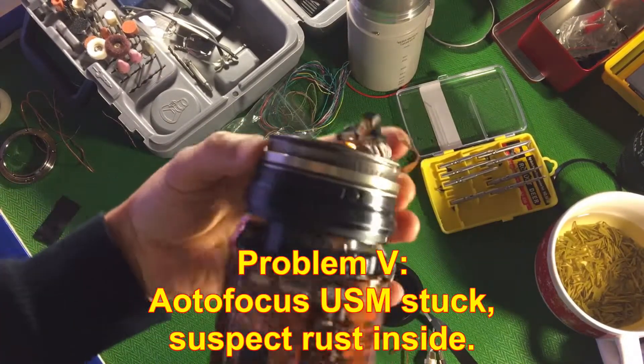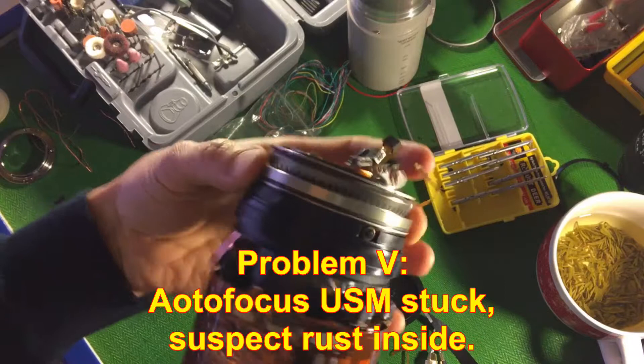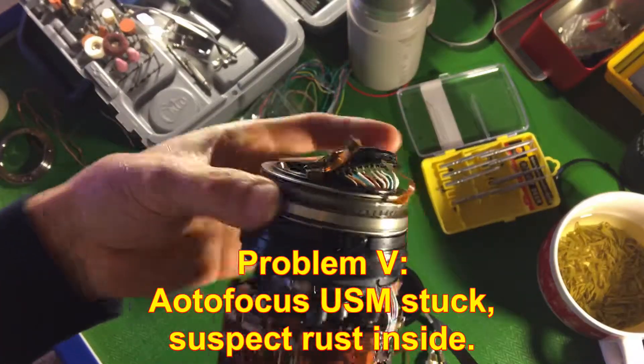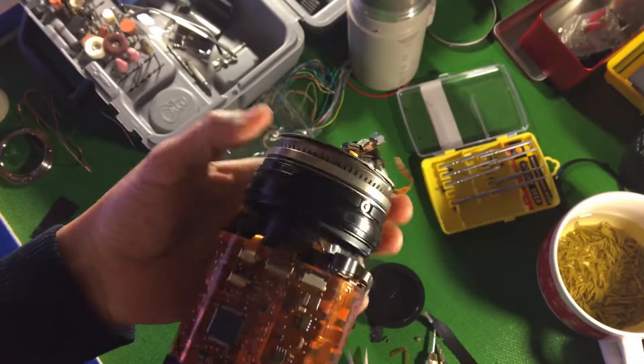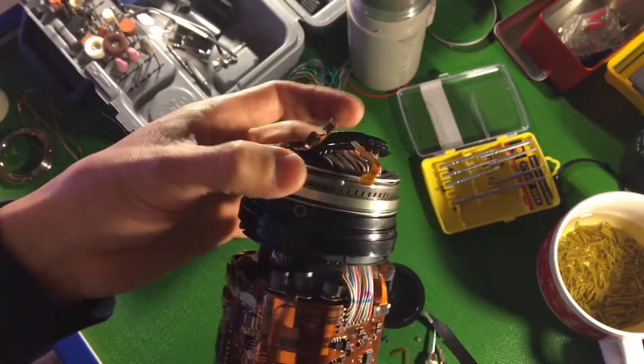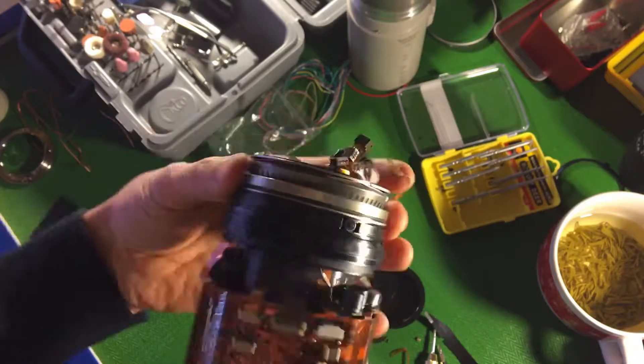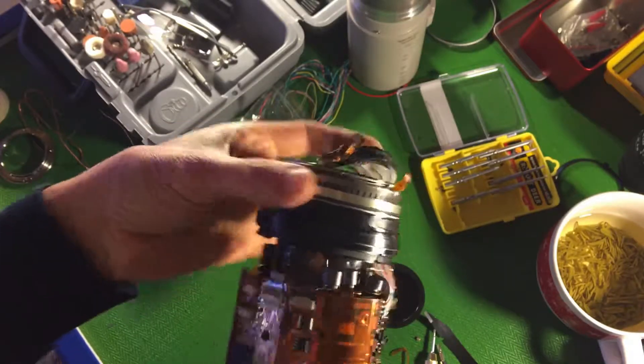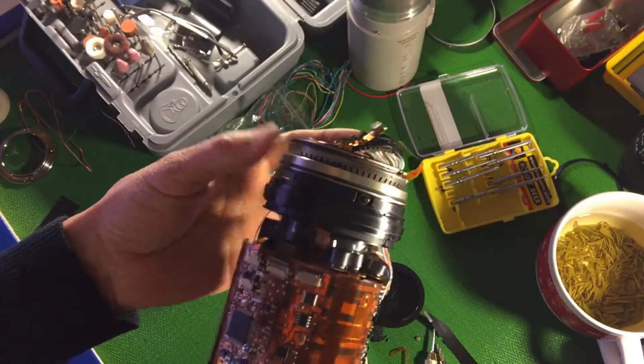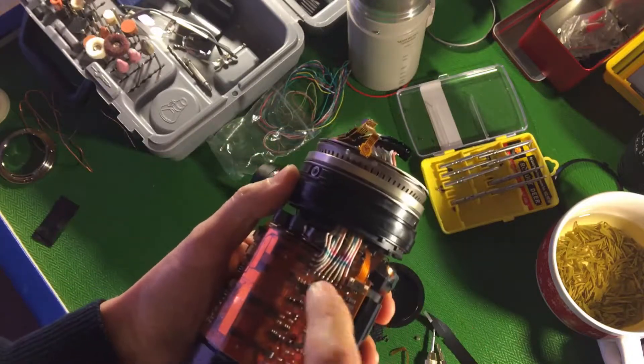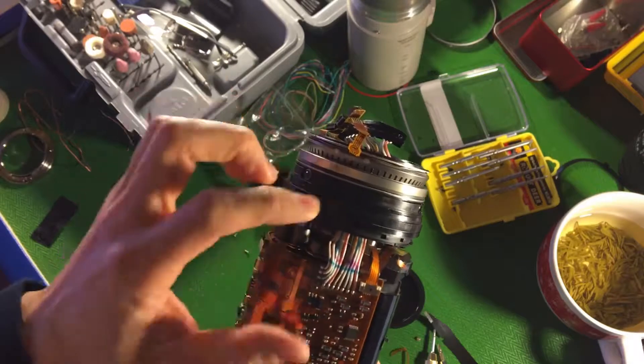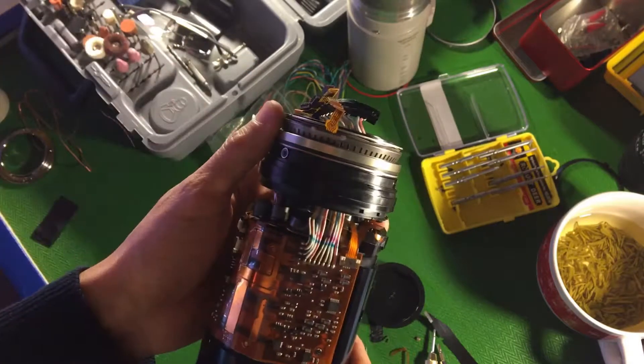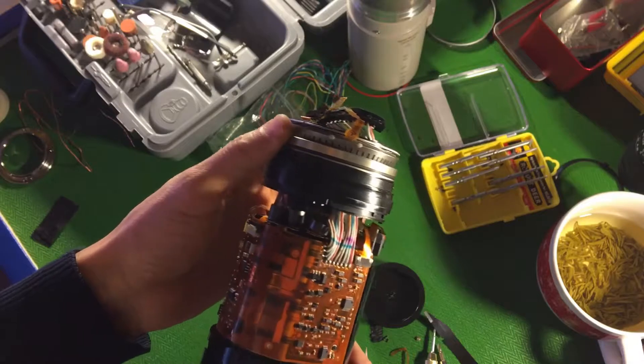When I rotate this USM motor, I can feel it's very stuck. The USM motor might have a lot of rust inside, causing extra overload to those circuits. Plus those circuits are also damaged. I think everything combined together fails the autofocus.